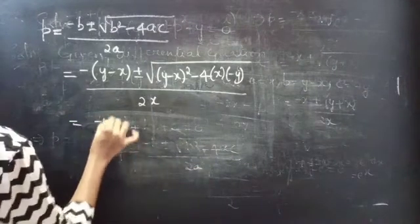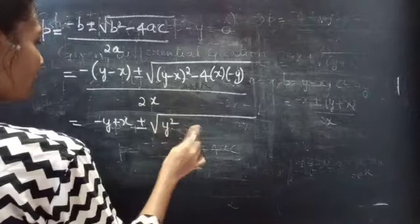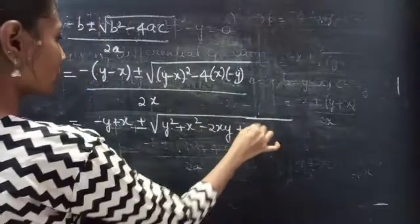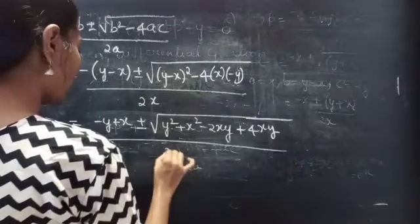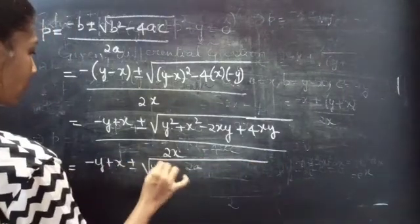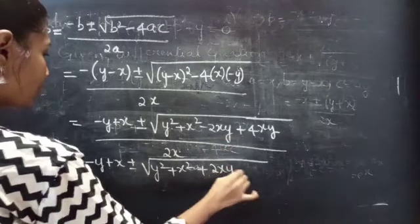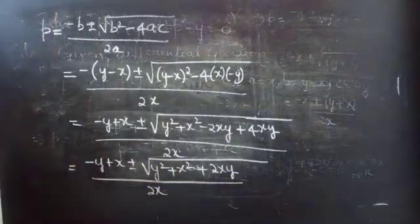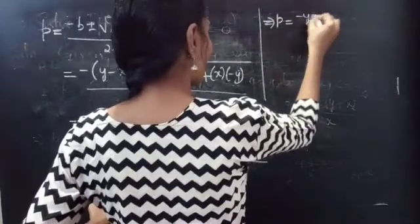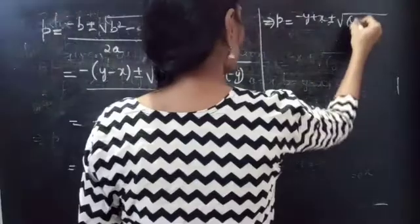Then this becomes (-y + x) ± √[(y - x)² + 4xy] / 2x. Expanding: (y - x)² + 4xy = y² + x² - 2xy + 4xy = y² + x² + 2xy, which equals (y + x)², since a² + b² + 2ab = (a + b)².